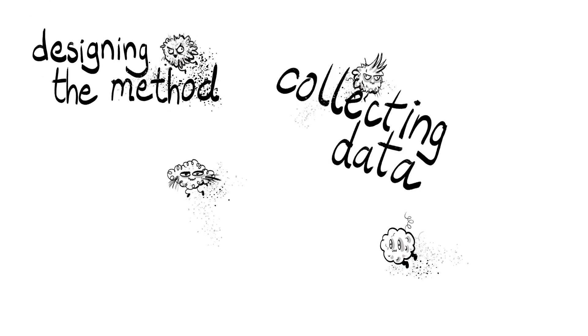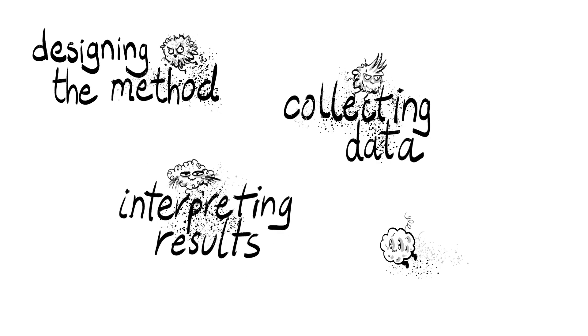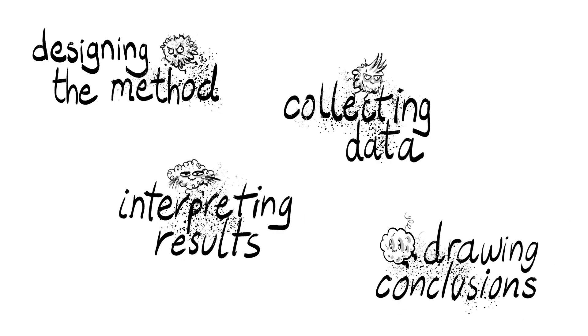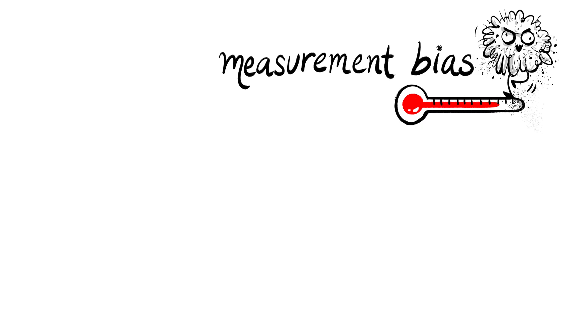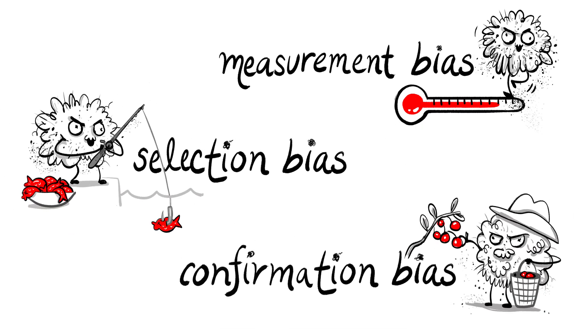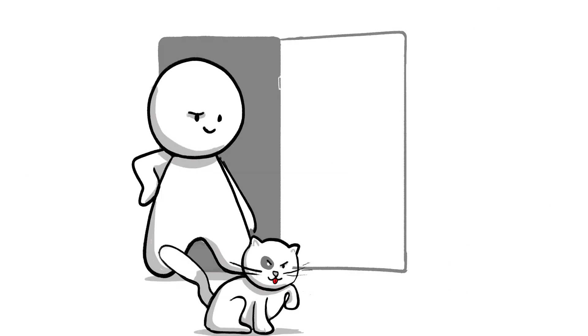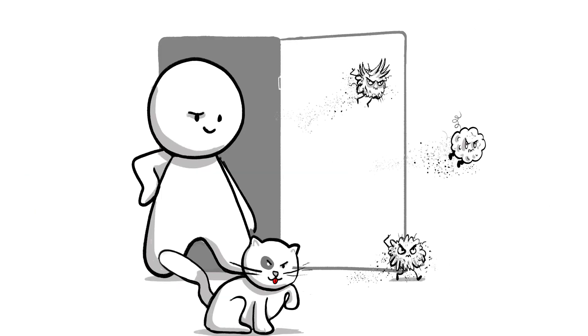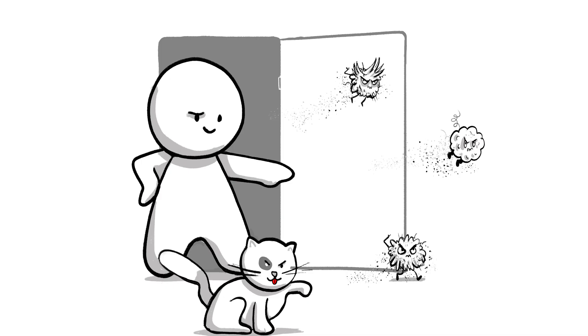To sum up, biases can arise at any stage of an investigation, from designing the method and collecting data, to interpreting the results and drawing conclusions. They can be produced by measuring instruments, sampling methods, or an unconscious desire to be proved correct. So to make sure you design a fair test, try to identify and avoid all sources of bias.